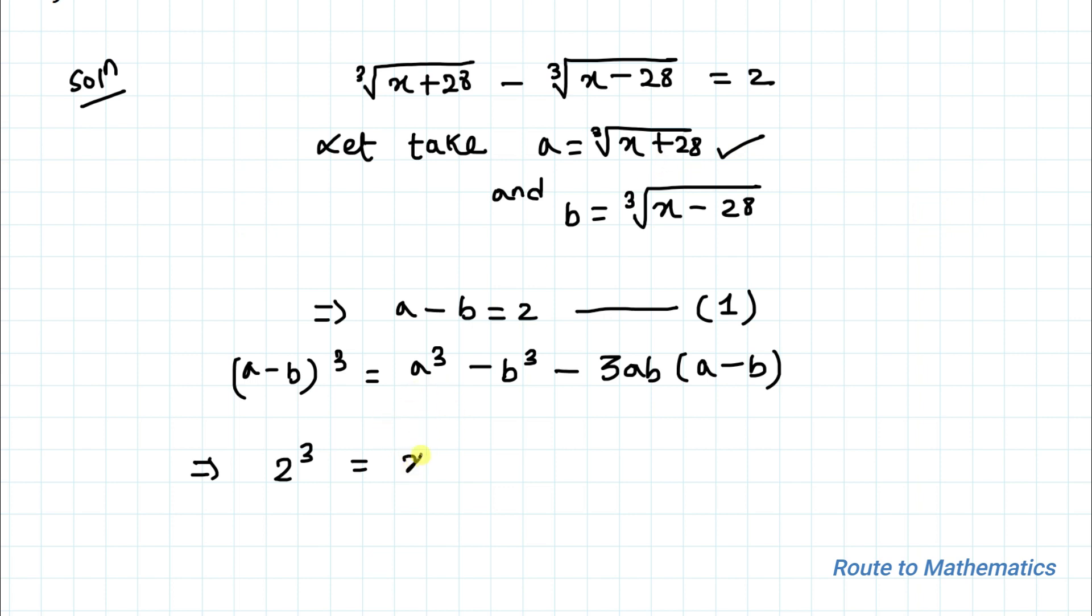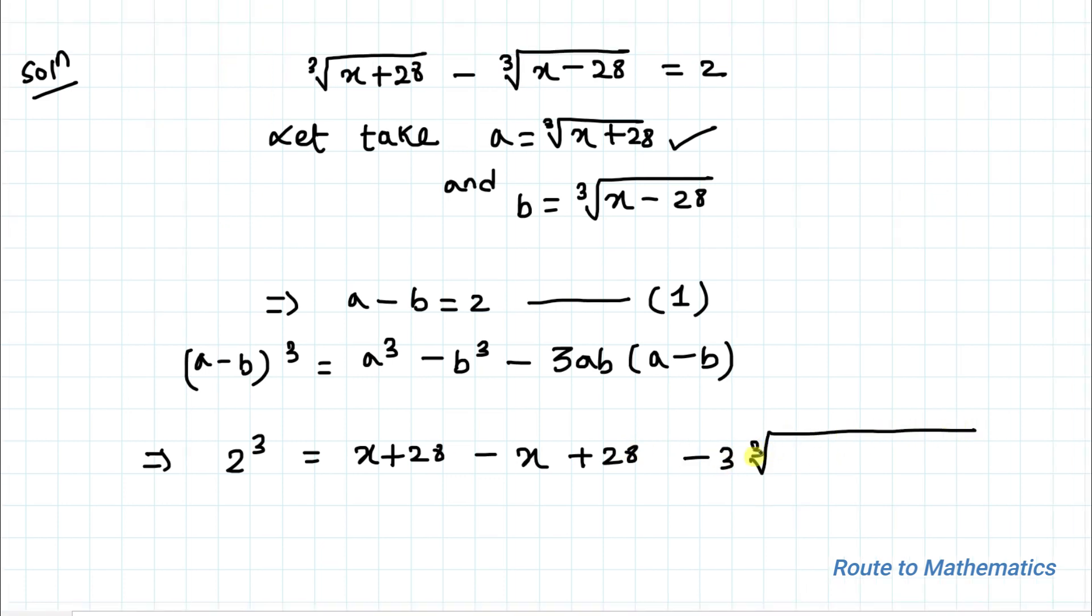So we have x plus 28 minus x plus 28 minus 3 cube root of x plus 28 multiplied with x minus 28. Again here we have a minus b, so let's just put the value here.